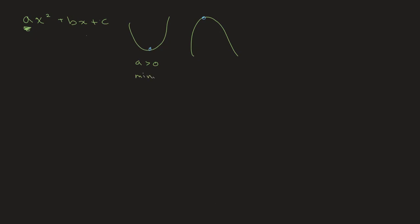And if a is less than 0 — if a is negative — then we have a maximum point. One very easy way to remember this is that when a is positive we have a smiley face, and when a is negative we have a frowny face.